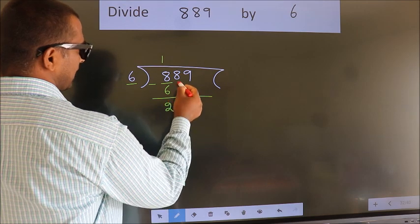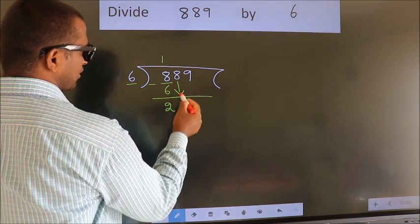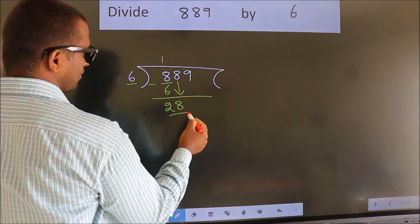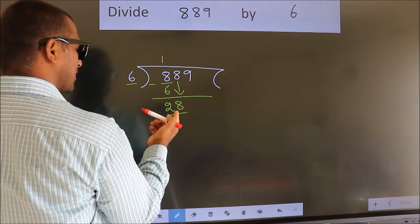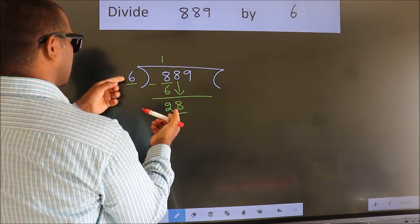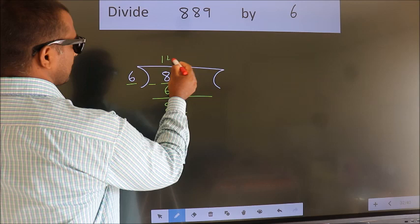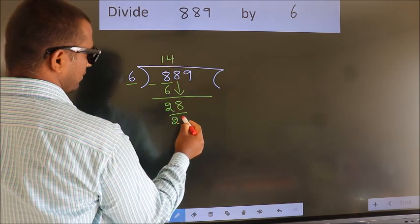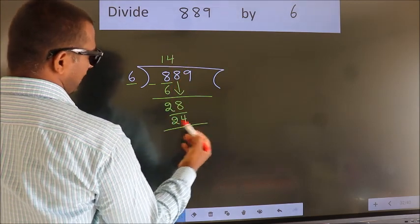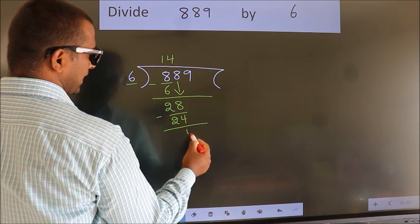After this, bring down the beside number. So, 8 down, giving us 28. A number close to 28 in the 6 table is 6 times 4, which is 24. Now, we subtract. We get 4.